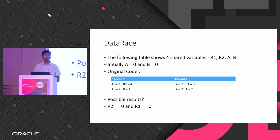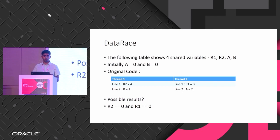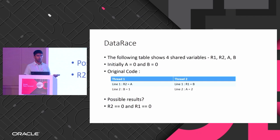For example, with thread 1 and thread 2, both having two lines of code. Variables R1, R2, A and B are all initialized to zero. Thread 1 has R2 = A and B = 1; thread 2 has R1 = B and A = 2. In the first line, A is still zero and not yet updated, so the values will be zero, zero.